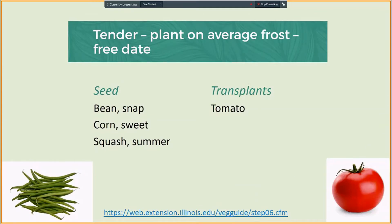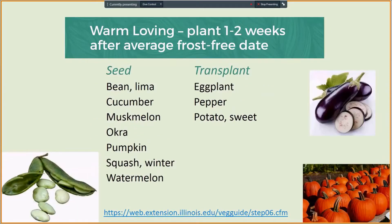Tender crops such as snap beans, sweet corn, tomatoes, and summer squash should all be planted on your area's frost-free date. Warm-loving crops such as lima beans, cucumbers, peppers, and others listed on the slide, should be planted one to two weeks after your area's frost-free date. Remember, your frost-free date, looking at the maps, are averages, so make sure to pay attention to your local forecast to determine if a late spring frost is likely after the average planting date.